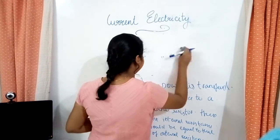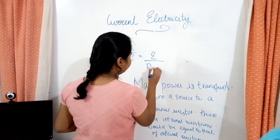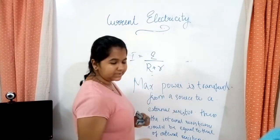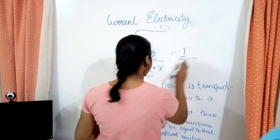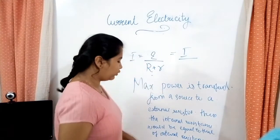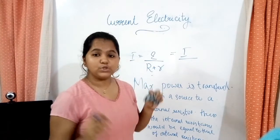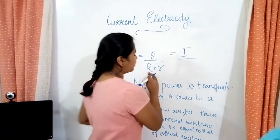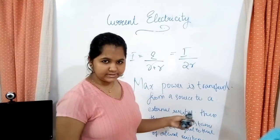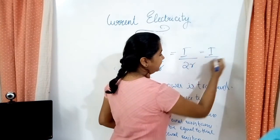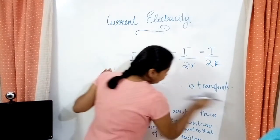We know I is equal to E divided by R plus r, where R is external resistance and r is internal resistance. When the condition holds — internal resistance equals external resistance — we can write both as small r, making the denominator 2r. So I equals E divided by 2R.